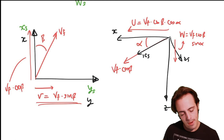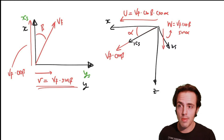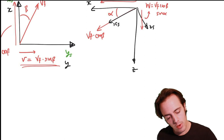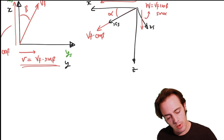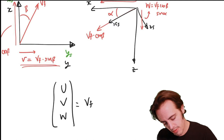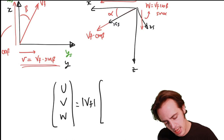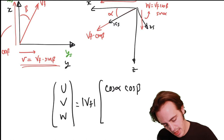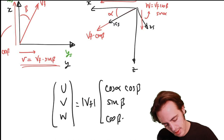We're going to do these transformations in more detail in module 3, but I want you to have the correct definitions written down now. The aircraft three components of velocity U, V, and W are equal to V_F multiplied by: cosine alpha cosine beta; sine beta; and cosine beta sine alpha respectively.